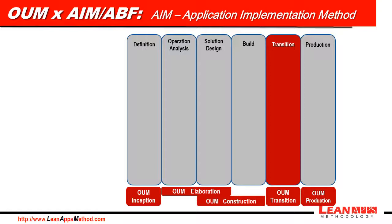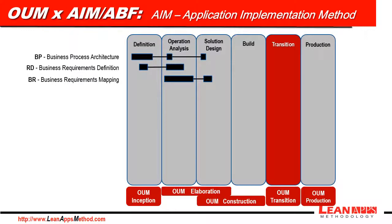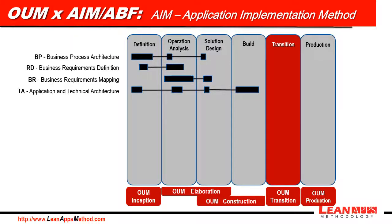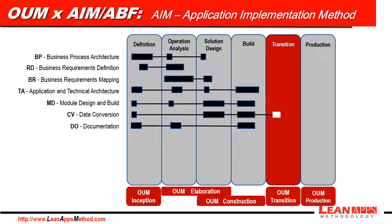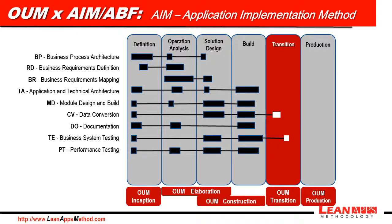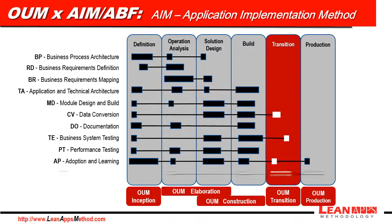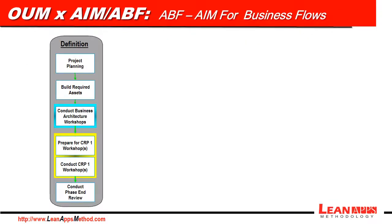We also have 11 processes that are executed throughout those phases: first, Business Process Architecture; second, Business Requirements Definition; third, Business Requirements Mapping; fourth, Application Technical Architecture; fifth, Module Design and Build; Data Conversion; Documentation; Business System Testing; Performance Testing; Adoption and Learning; and finally, Production Migration. If you want to understand in more detail what those processes are about, please watch the long version of this implementation video shown at the bottom of this page.